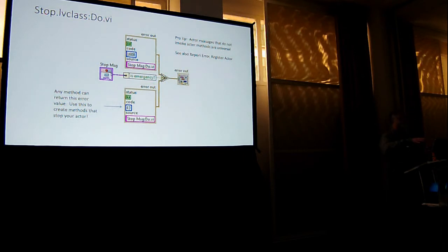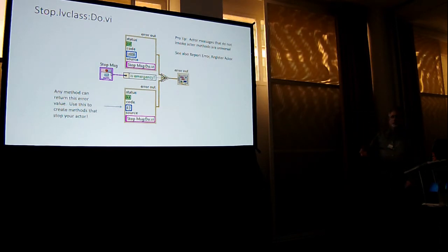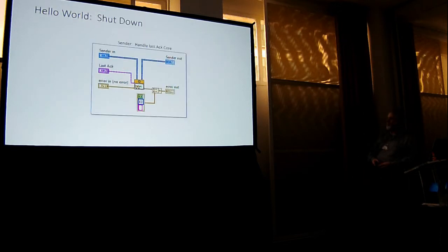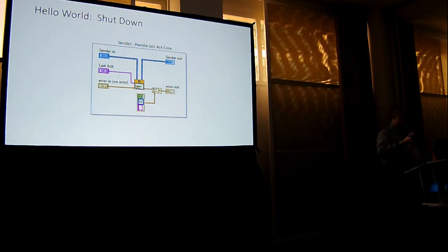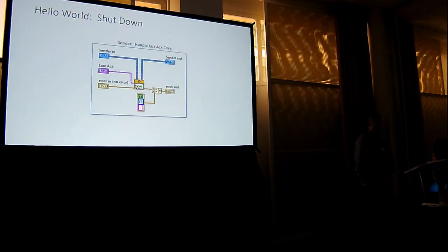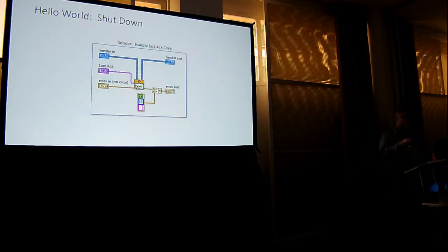So now we've launched our Hello World actor, invoked the Hello World message, and the receiver actor has shut down. We need to stop the caller — and that happens in last ack core. That's where we learn that an actor has stopped. Sender knows it has exactly one nested, and knows that when that nested is done, it should also stop. So we just send ourselves error 43 again. This is Hello World in Actor Framework — a nice setup for thinking about the minimum set.